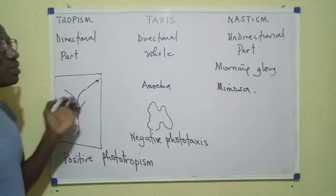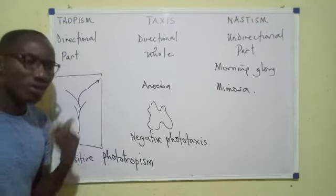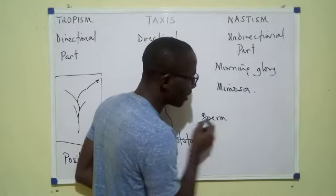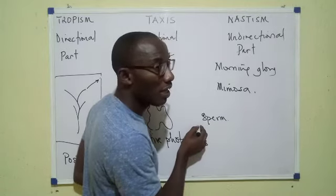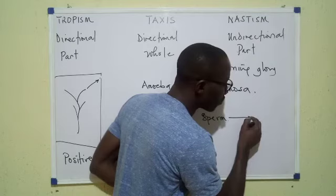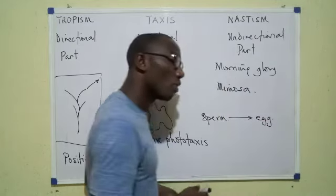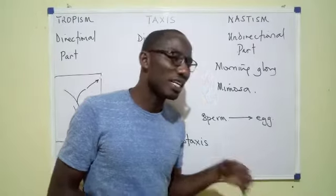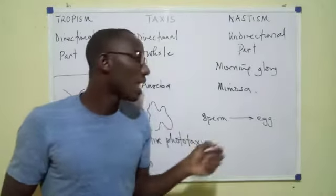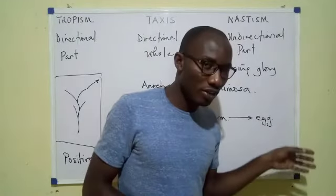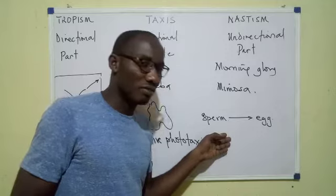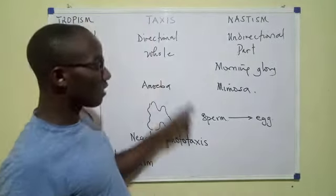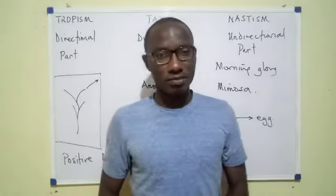Think also of a sperm in the reproductive tract of a woman. In some organisms, there is evidence that the egg attracts the sperm. The attraction from the egg is a stimulus, and the sperm swimming towards it is directional — so we call it positive. Is it tropism or taxis? It is taxis, because it involves the whole sperm moving, not just a part of it.